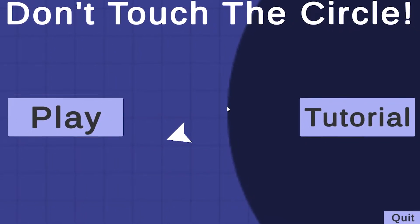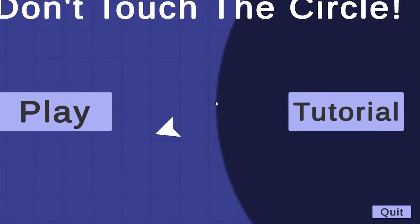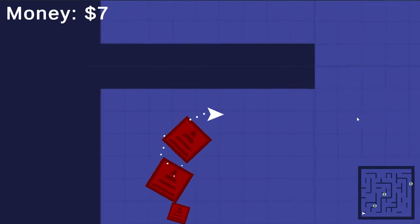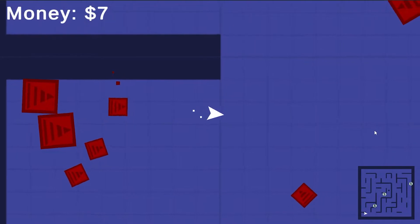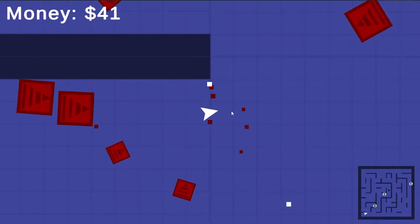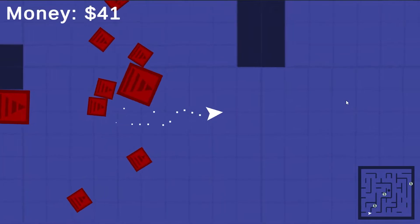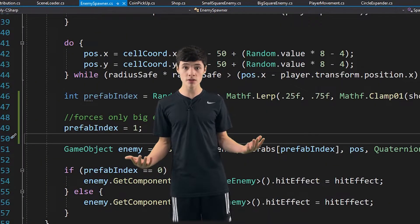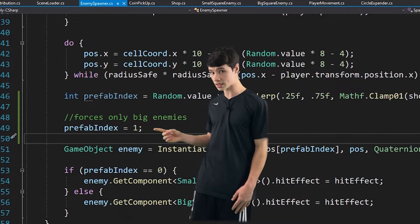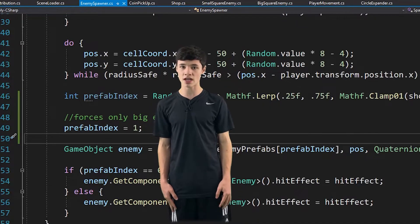In the Ludum Dare 50 Game Jam, I made a game called Don't Touch the Circle, and in the game, there are two types of enemies, small squares and big squares. This can get a little repetitive with only the two options, so we can change up the sizes using this method. And I'm only going to be doing this with the big squares, so this line of code right here just prevents the little guys from spawning in.